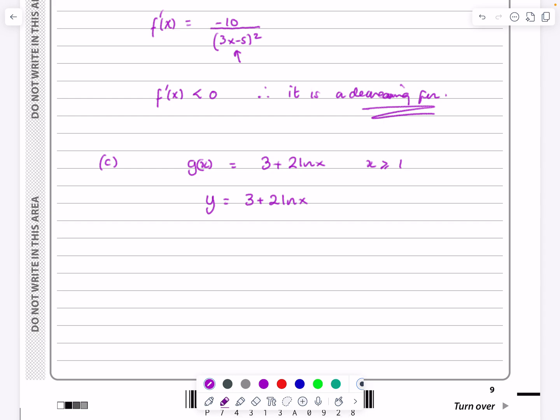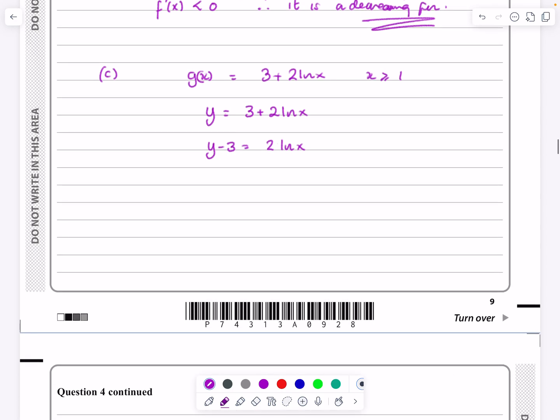And then that will give us the inverse function. So do it slowly, y minus 3 is equal to 2 log x, so y minus 3 over 2 is equal to log x. So x is equal to e both sides, to get rid of that, is e to the y minus 3 all over 2 is my inverse function.